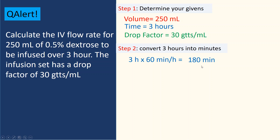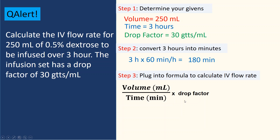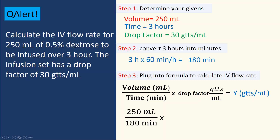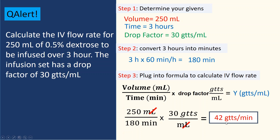Now plug into the formula — volume in mLs over time in minutes, times drop factor in drops per mL. That gives you: 250 mLs over 180 minutes, times 30 drops per mL. Milliliters cancel out, giving you approximately 42 drops per minute. This is the flow rate in drops per minute.